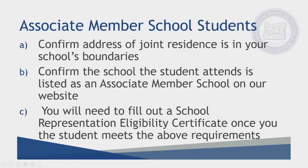We also want to talk a little bit about our associate member school students. Please confirm the address of joint residence of your associate member school student is in your school's boundaries. You also want to confirm the school the student attends is listed as an associate member school on our website. You will also need to fill out a school representation eligibility certificate once the student meets the above requirements.